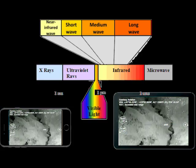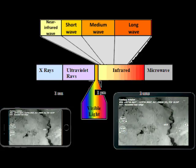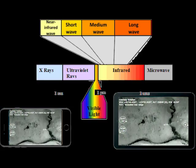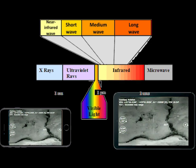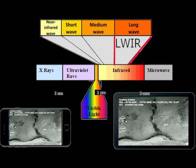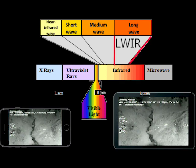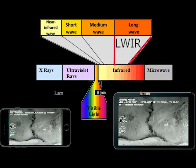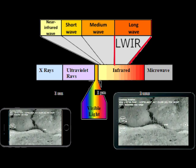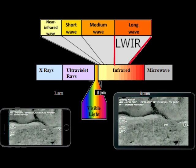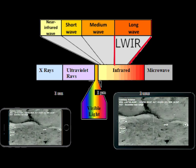Infrared is light not visible to humans. There are four wavelengths of infrared. We use long wave to see through smoke, night, mist, and thin clouds, but not thick clouds or fog.